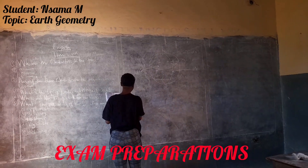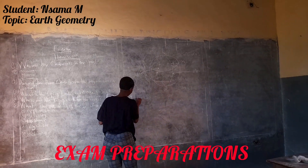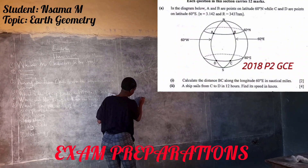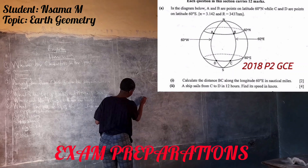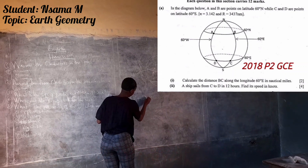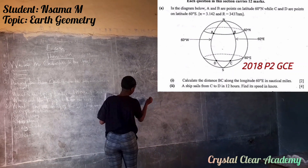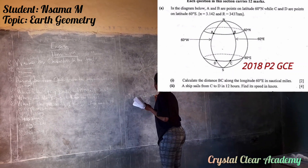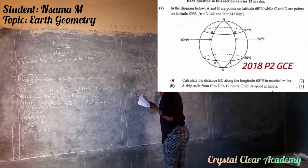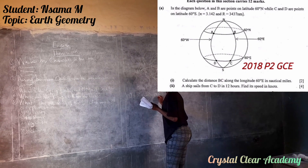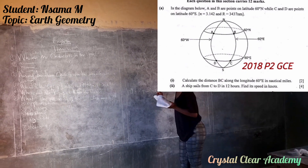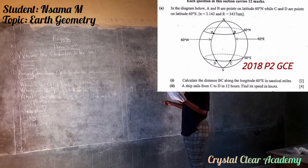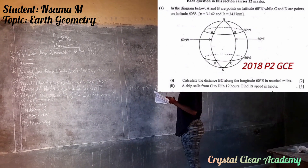60 degrees plus 60 degrees, which equals 120 degrees, which we found here.